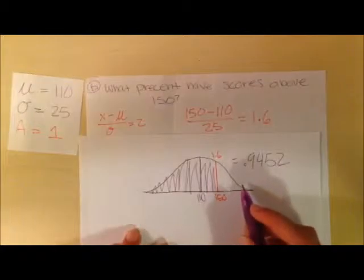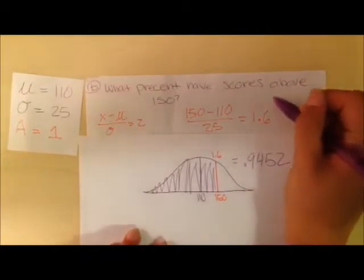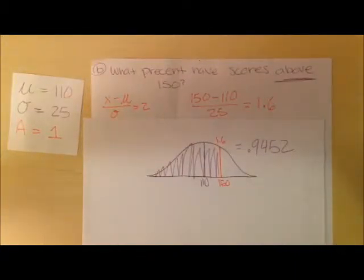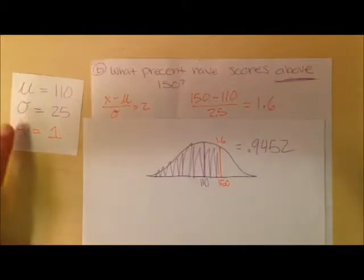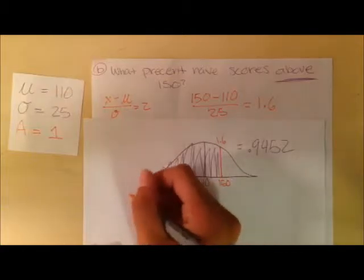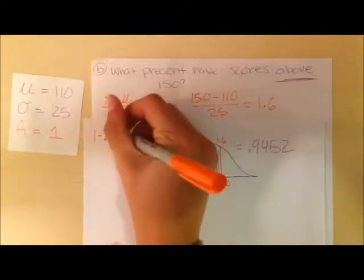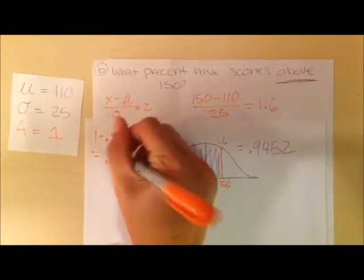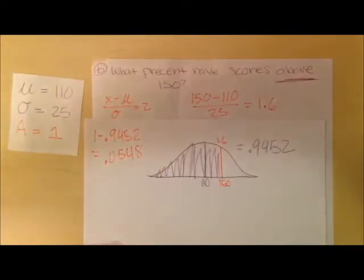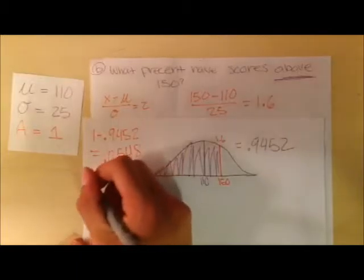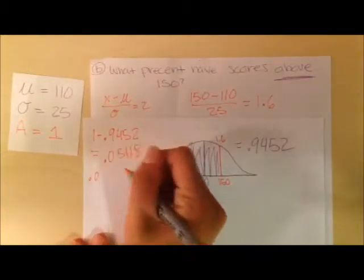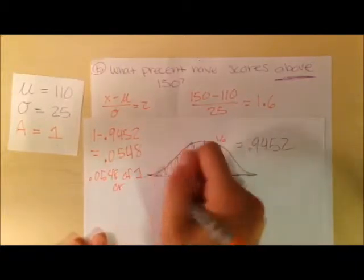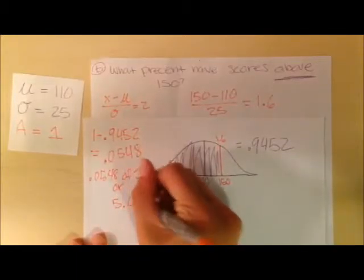Again, this area is not what we're looking for because we want above 150. So we'll have to do the same thing we did in the last problem and subtract this from our entire area under the curve, which we should remember to be 1. So if we do that, we have 1 minus 0.9452. That gives us 0.0548, which is basically saying 0.0548 of 1 or 5.48%.